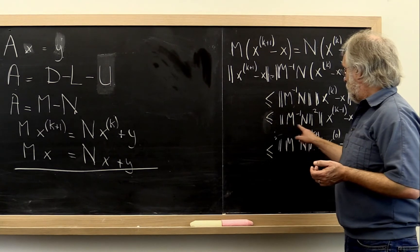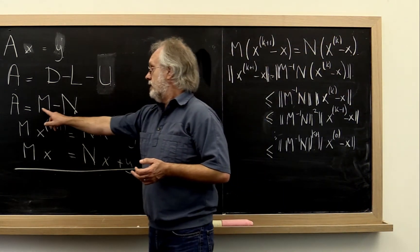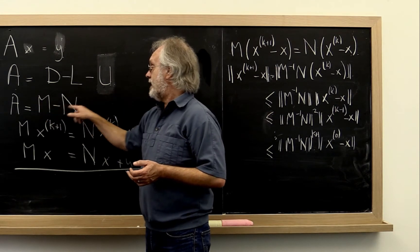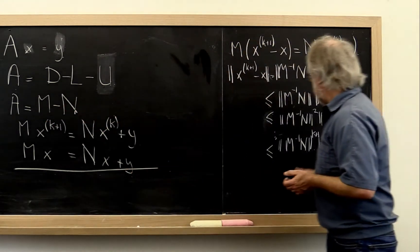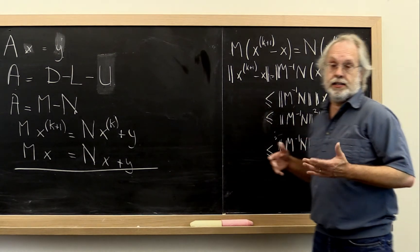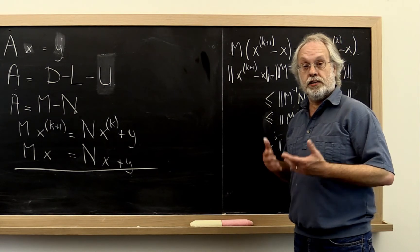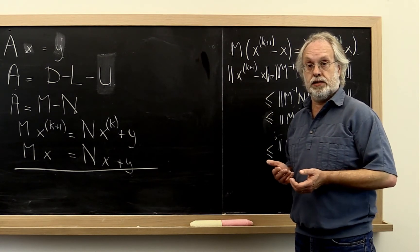Unfortunately, to discuss under what circumstances a splitting of A into M minus N has the property that for some norm, M inverse N is less than 1, requires us to learn a little bit about eigenvalues and the spectral radius of the matrix comes in.